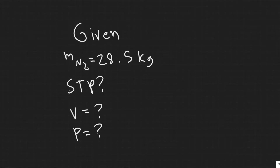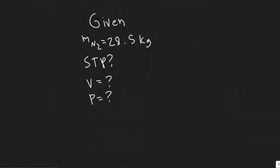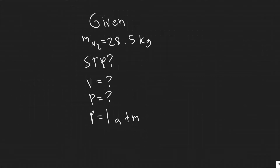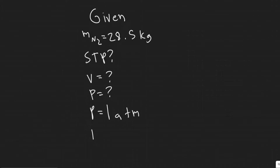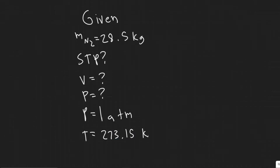The first thing to understand is what STP means. STP means standard temperature and pressure — it gives you both the temperature value and the pressure value. The pressure at STP is one atmosphere (1 ATM), and the temperature at STP is 273.15 Kelvin. Kelvin is just another temperature scale alongside Fahrenheit and Celsius.